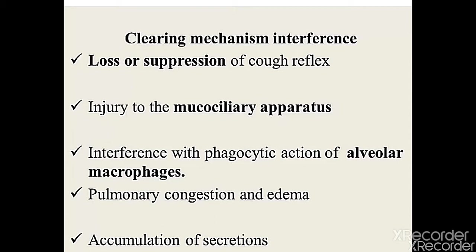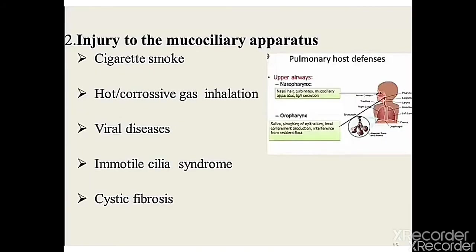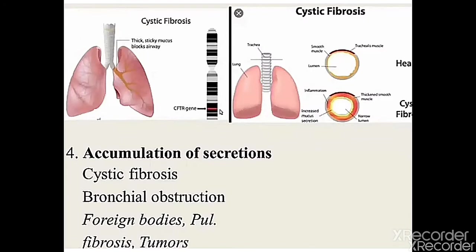Loss or suppression of cough reflex occurs in coma, anesthetic patients, or with certain drugs. Injury to the mucociliary apparatus may be due to cigarette smoke, corrosive gas inhalation, viral disease, or immotile cilia syndrome (Kartagener syndrome) and cystic fibrosis. Interference with phagocytic action — alcohol destroys alveolar macrophages; tobacco smoke and anoxia also impair them. Accumulation of secretions occurs in cystic fibrosis, bronchial obstruction, foreign bodies, and tumors — all risk factors for pneumonia.